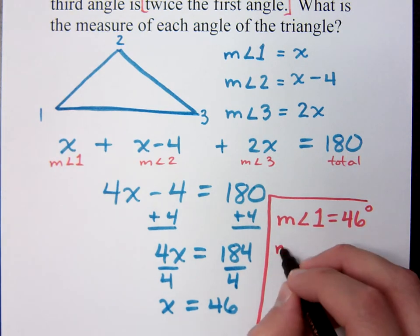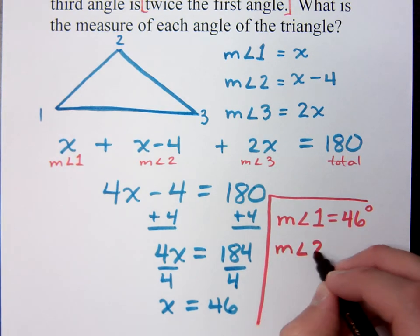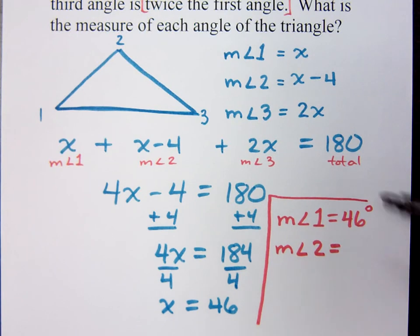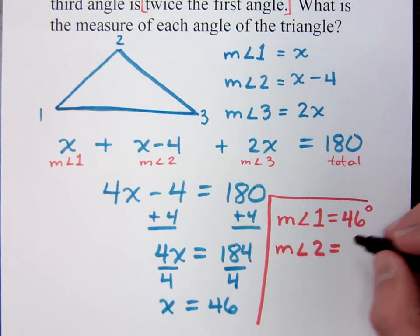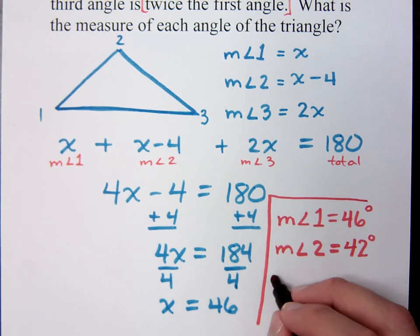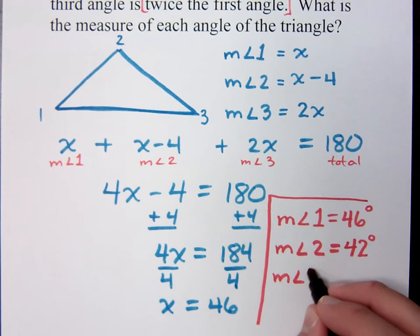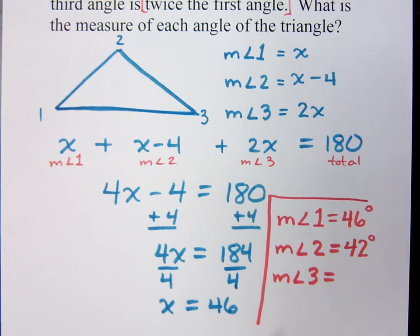And what's the measure of angle two now? Because x was just the measure of angle one. Right. The measure of angle two is four degrees less than that. So four degrees less than 46 is 42. And then the measure of angle three was given to us to be twice the first one. So what is that? 92 degrees.